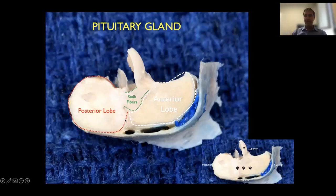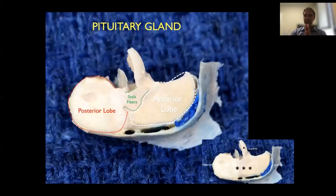We have a posterior lobe that is smaller — the neurohypophysis. In between there is something called the pars intermedia, because as you probably studied in embryology, the anterior lobe and the posterior lobe have different embryological origins. As they come together in development, there is a cleft in between called Rathke's cleft, where sometimes you've heard about the Rathke's cleft cyst.